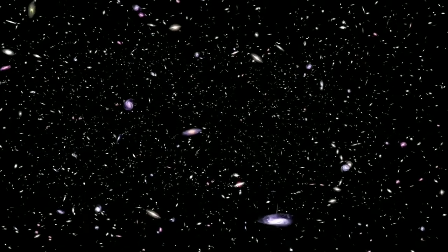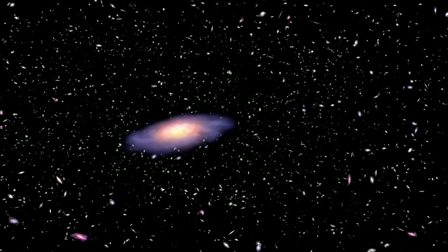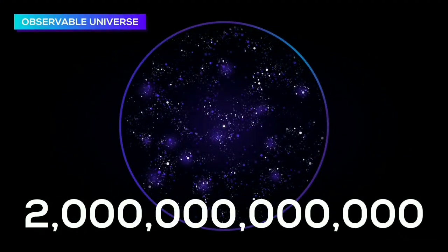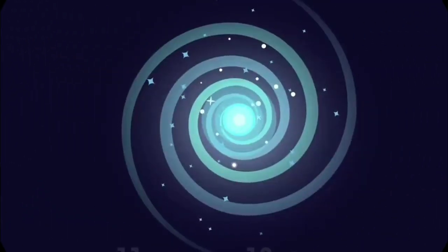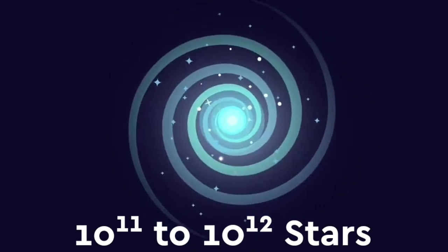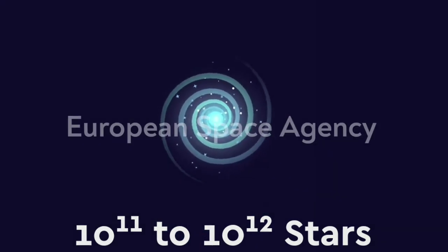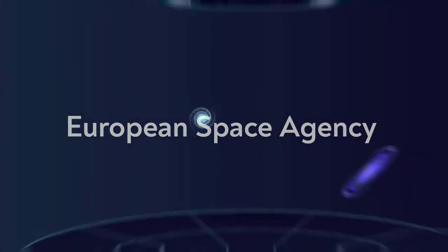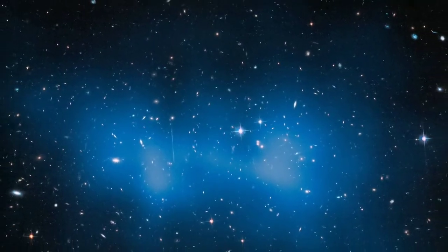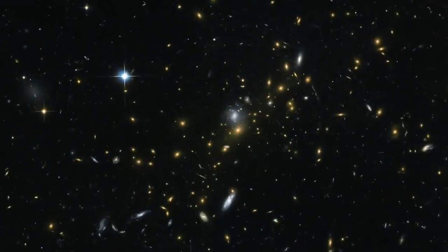To work out the number of atoms in the observable universe, we need to know its mass, which means we have to find out how many stars there are. A German supercomputer ran a simulation and estimated that around 200 billion to 2 trillion galaxies are contained in the observable universe, and each galaxy contains between 10 to the power of 11 to 10 to the power of 12 stars according to the European Space Agency. This gives us somewhere between 10 to the power of 22 and 10 to the power of 24 stars.